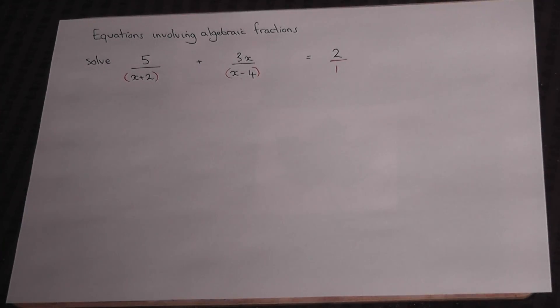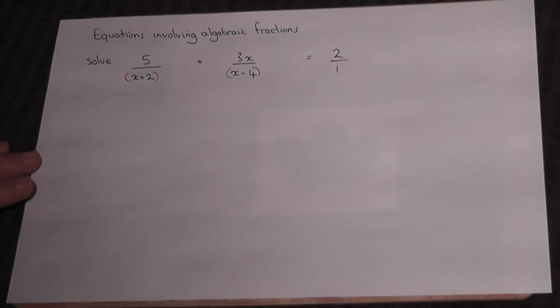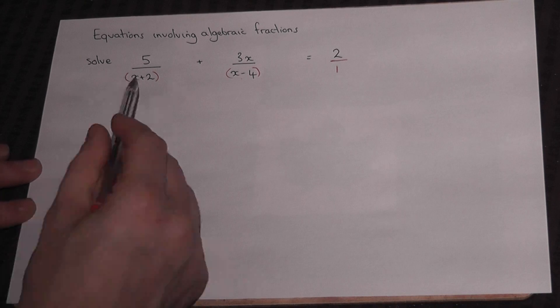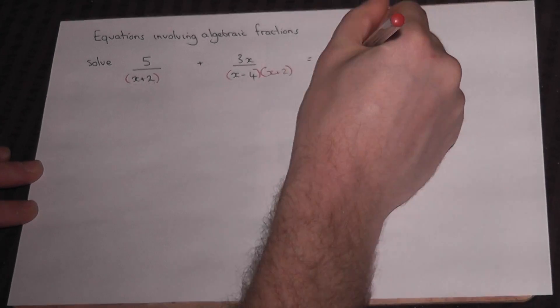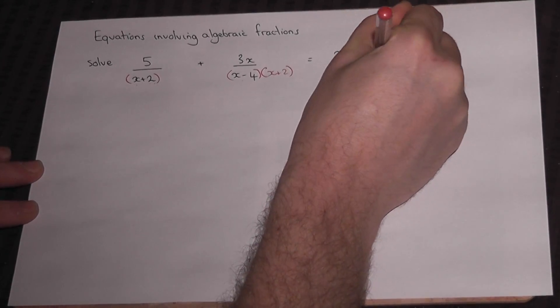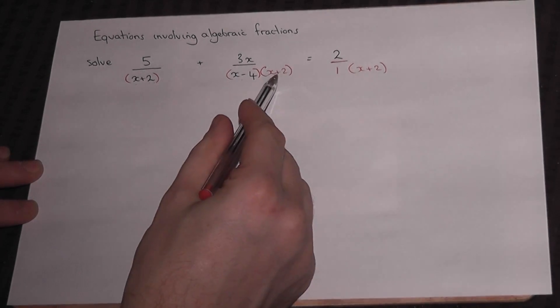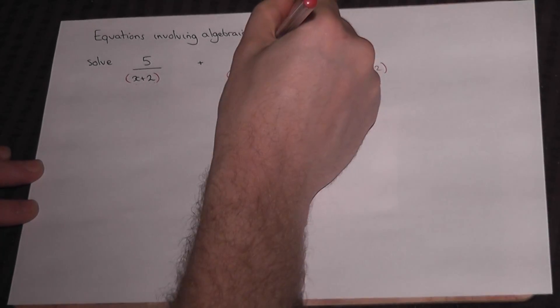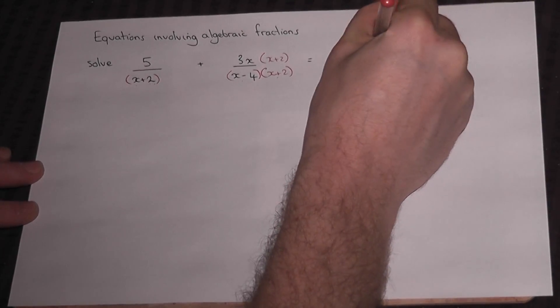The next step is to force each of these three terms to share a common denominator. We take the x plus 2 and force it into the other parts of the equation. But what you do below a fraction you must also do above, so I must add x plus 2 here and x plus 2 here.